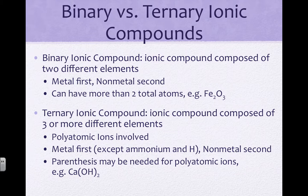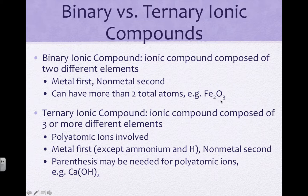For ionic compounds, it's important to distinguish between binary and ternary ionic compounds. A binary ionic compound is composed of two different elements only. The metal, or cation, positive ion, is listed first, and the non-metal is listed second. While the compound is made up of just two different kinds of elements, you can have more than two total atoms — so something like Fe2O3 would still be considered a binary ionic compound.